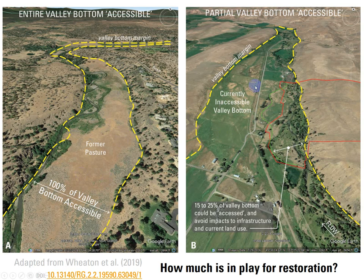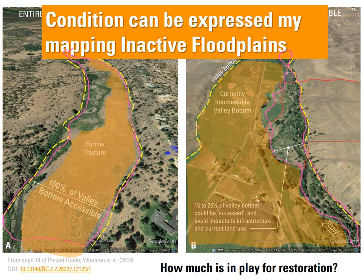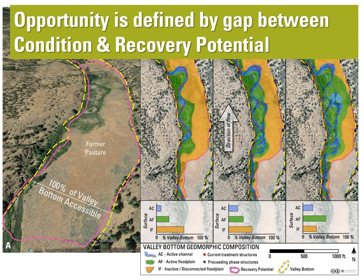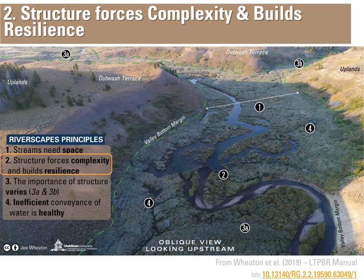Looking at existing riverscapes, we see so many situations where rivers have been pushed to respective sides of the valley bottom to make way for different land use — in one case grazing, in another a mix of grazing, cultivated agriculture, railroads, roads, and houses. So we can't always shoot for the whole valley bottom. We can express condition by how much of the valley bottom is still being actively accessed versus inactive. Then we ask: how much is in play for restoration? We call that recovery potential. Opportunity is the gap between current conditions and recovery potential.